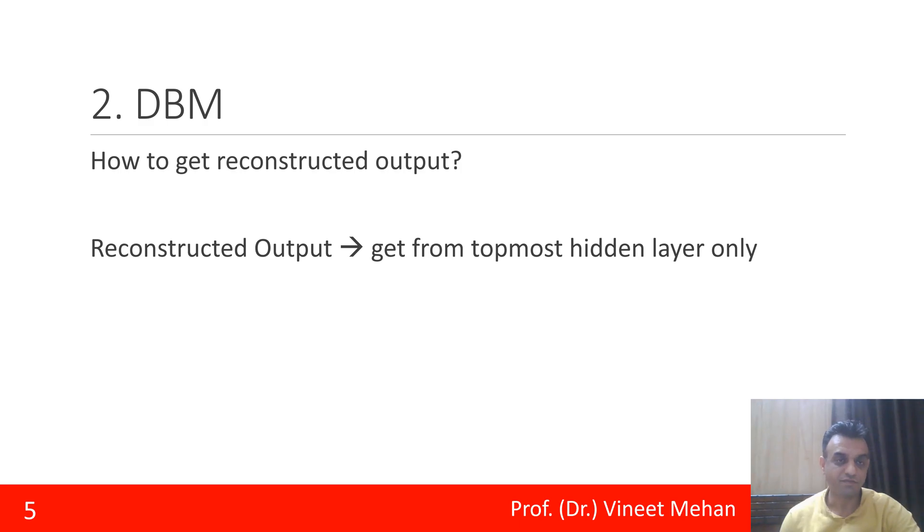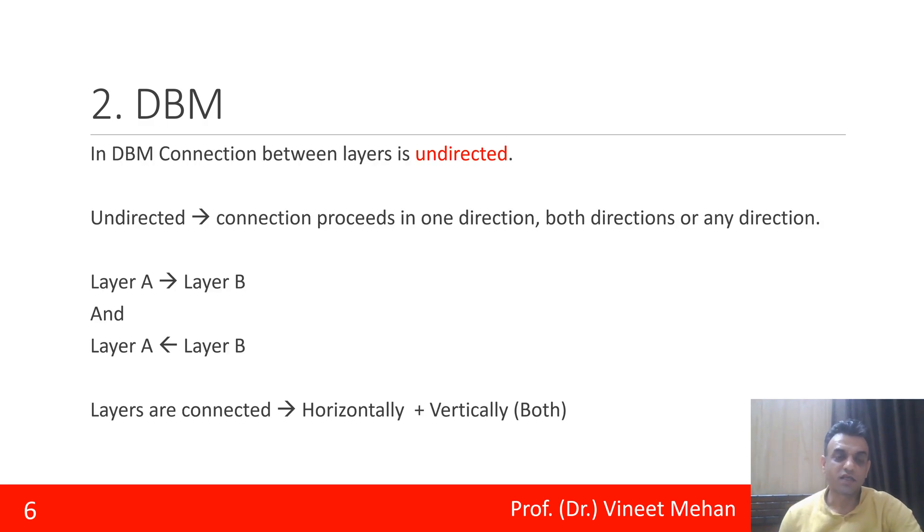Then is the connection. The connection between the visible layer and the hidden layer is undirected here. Undirected means connection can proceed in both directions: from layer A to layer B and similarly from layer B to layer A.